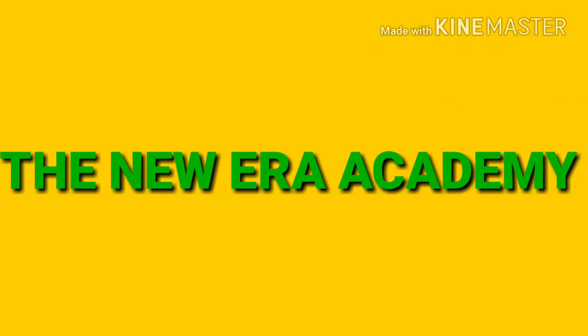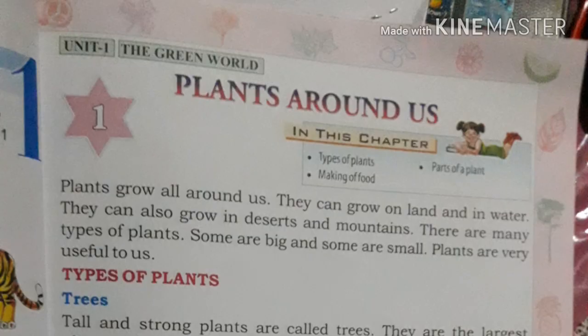Hello guys, welcome to our channel, The Newer Academy. Now we are going to study a chapter about the plants around us. In this chapter we are going to study types of plants, parts of plants, and making of food — that is, how plants make food. Plants grow all around us; they can grow on land and in water, in deserts and mountains. We see plants everywhere.